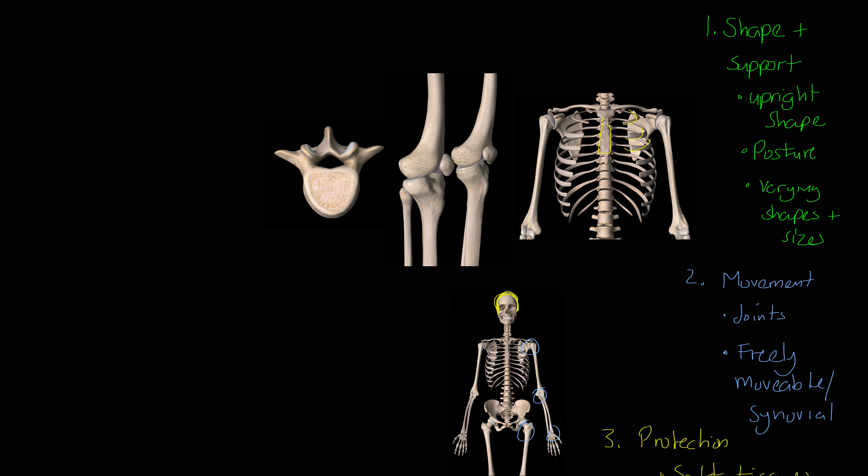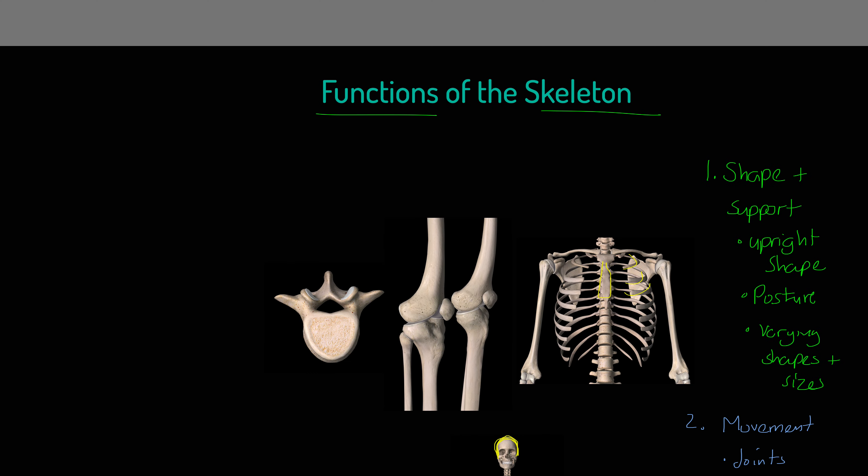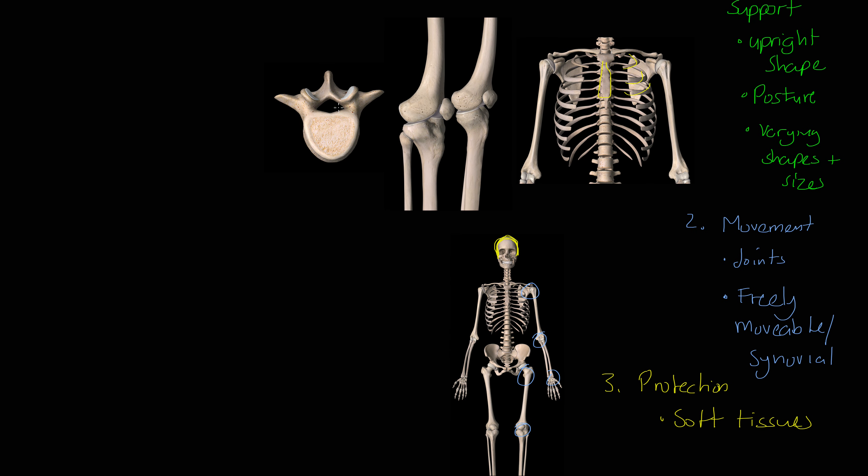I'll give you another example. This is a vertebra, by the way. A single vertebra. We have this cavity where the spinal cord runs through. This is a form of protection of soft tissue.